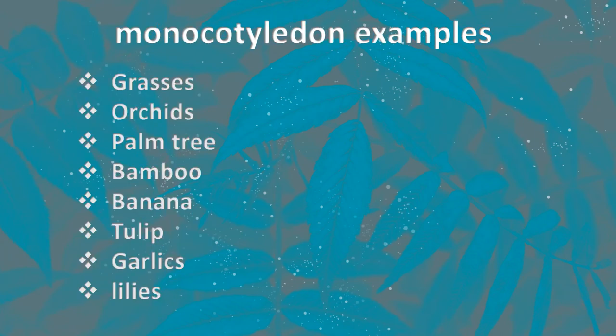Examples of monocotyledons are grasses, orchids, ferns, palm trees, bamboo, bananas, tulips, and garlic.